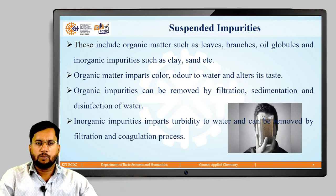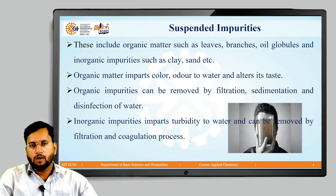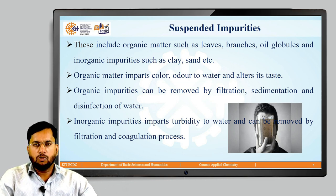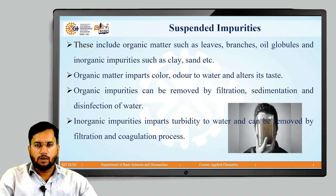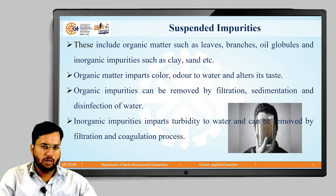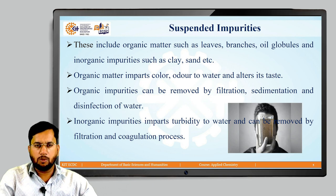Suspended impurities are impurities which suspend in water and include leaves, branches, oil globules, and ionic impurities such as clays. Organic matter imparts colour and odour to water and alters its taste. Organic impurities can be removed by filtration, sedimentation, and disinfection, whereas ionic suspended impurities impart turbidity to water and can be removed by filtration and coagulation.